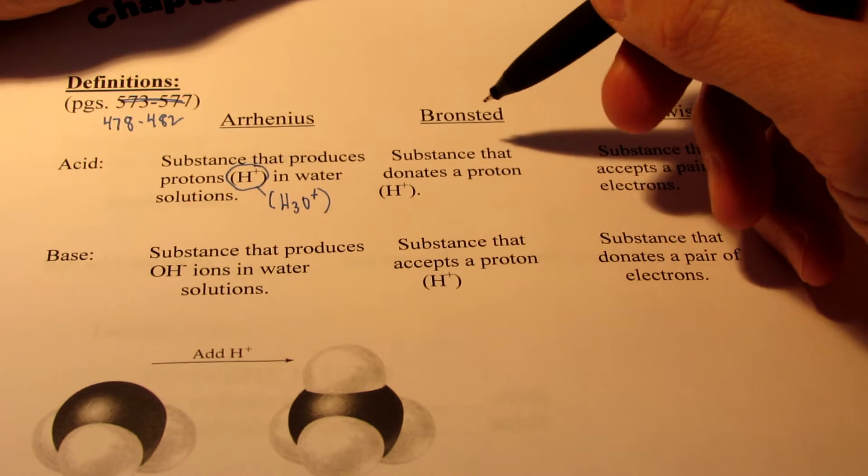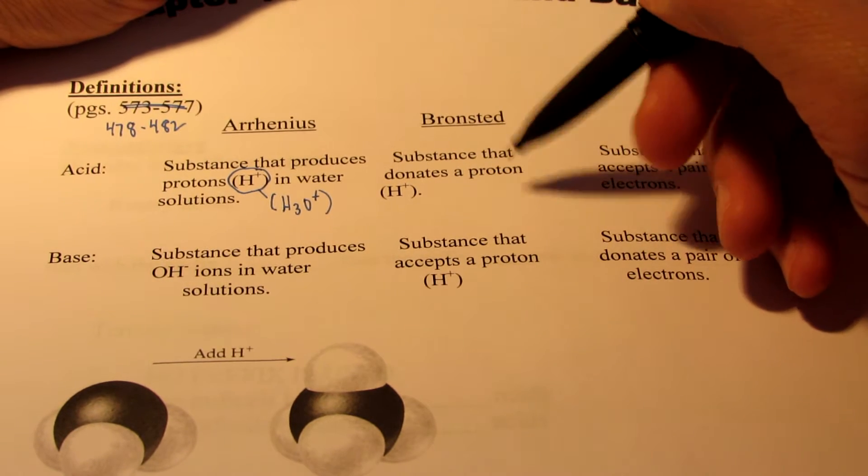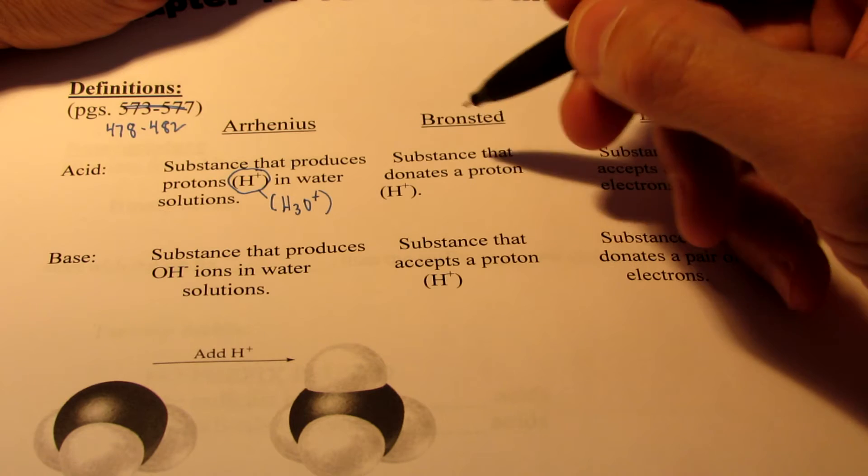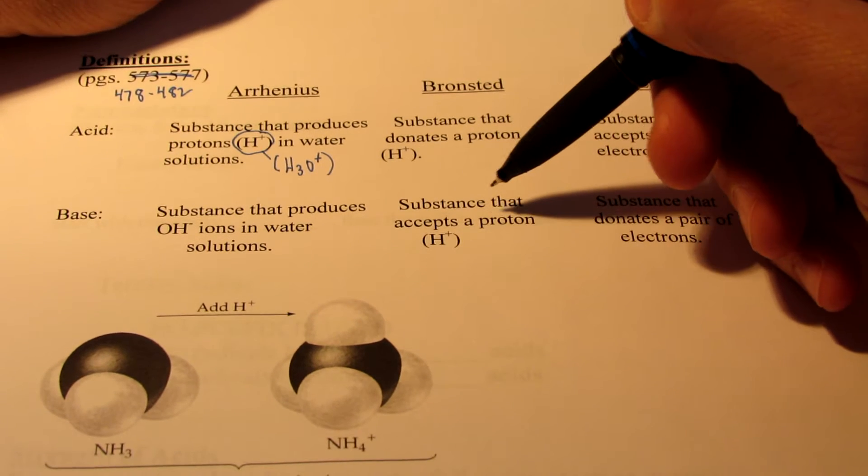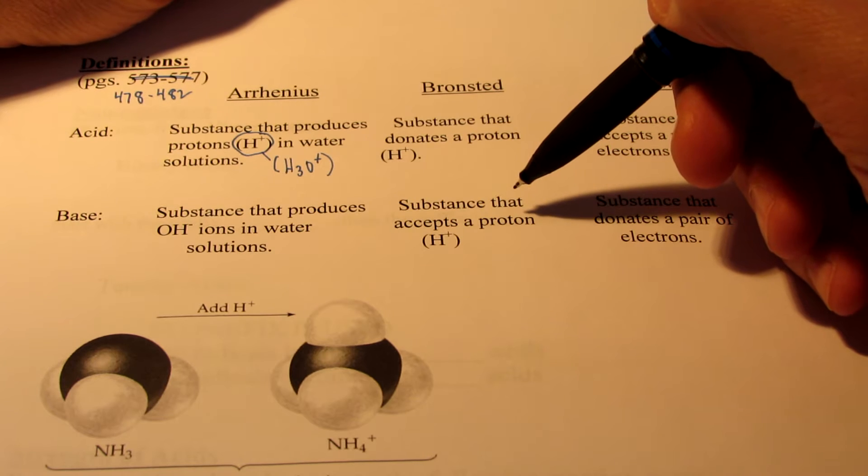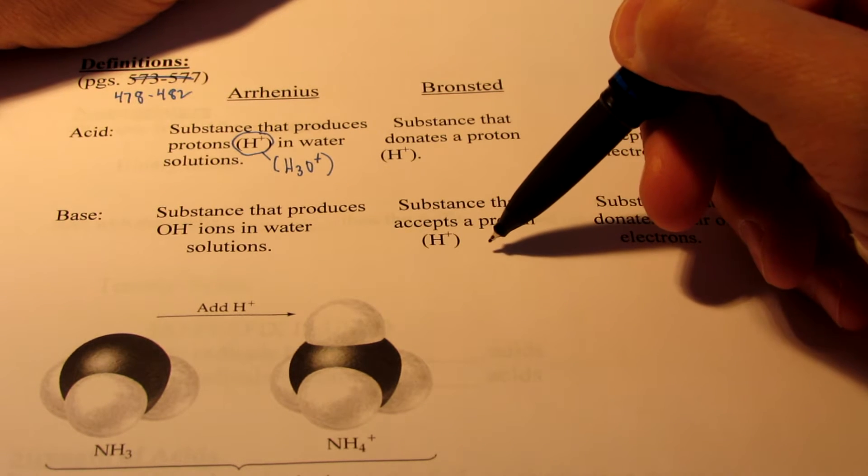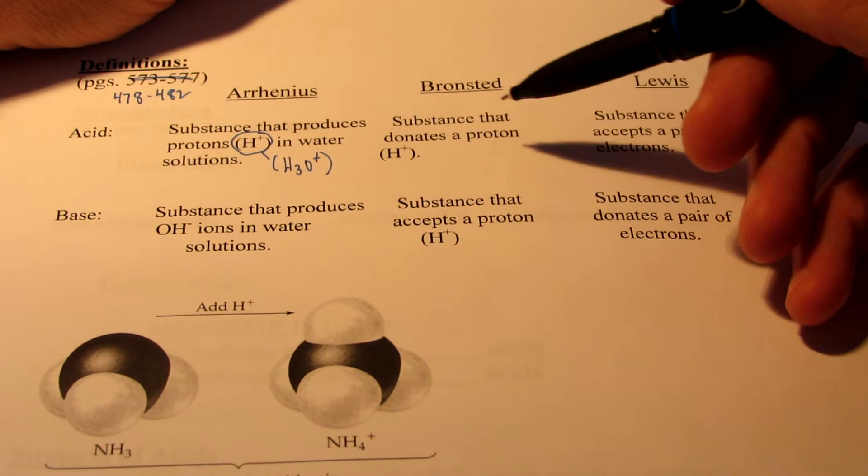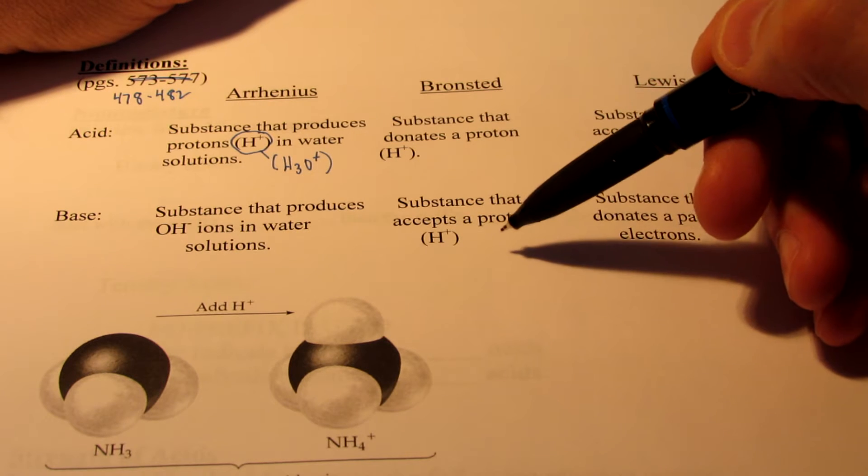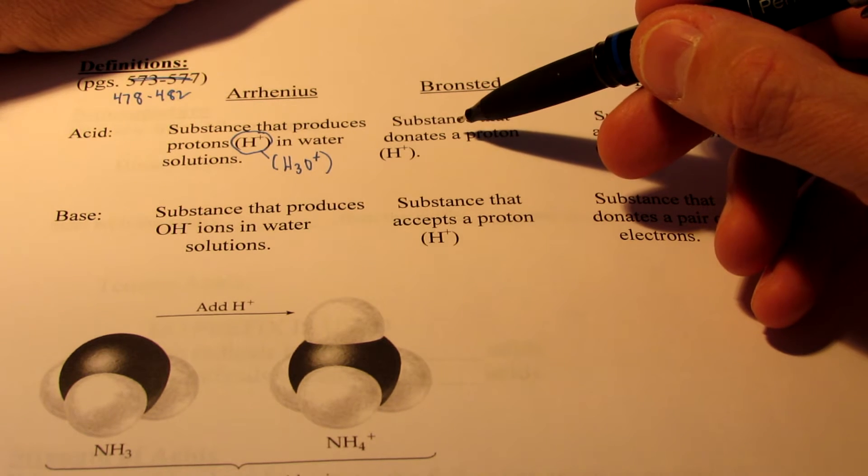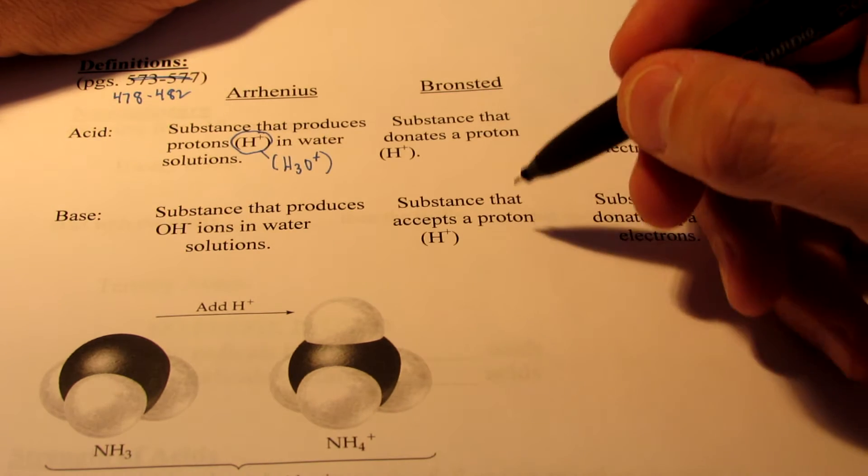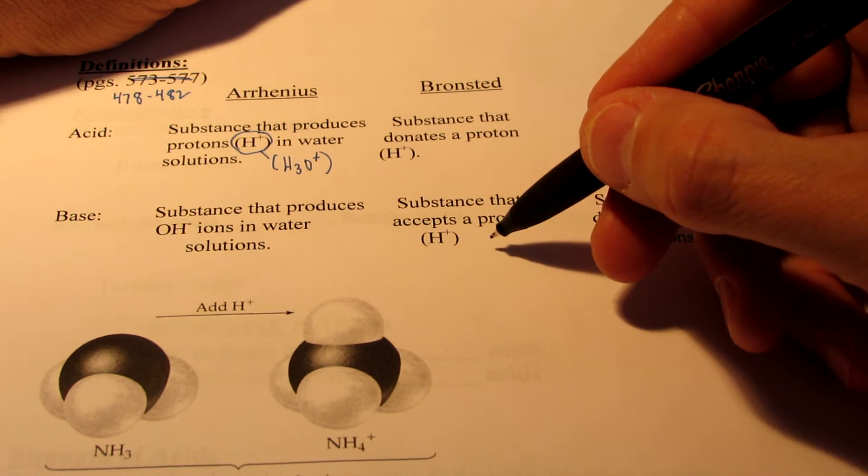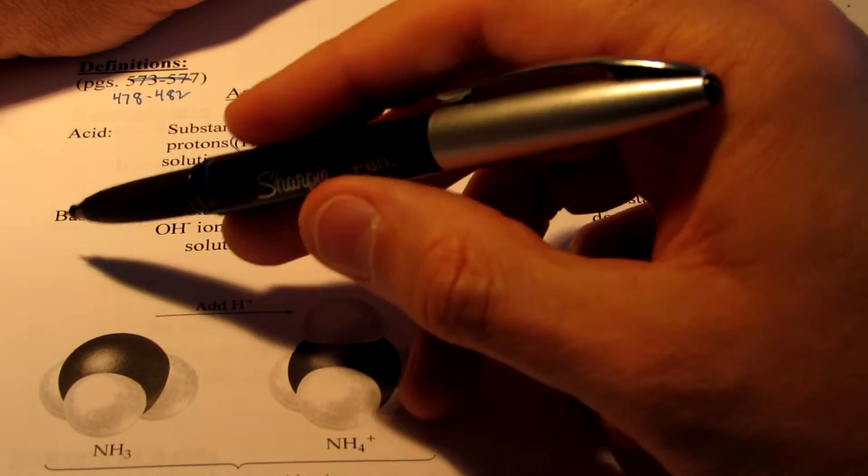The Bronsted definition of an acid is a substance that donates a proton, and I'll give you an example of that a bit later in our notes. The Bronsted definition of a base is something that can accept a proton. Notice once again that these are opposites of each other. Something that donates or gives up a proton when involved in a chemical reaction is a Bronsted acid, and the thing that gains that proton during the reaction is a Bronsted base.